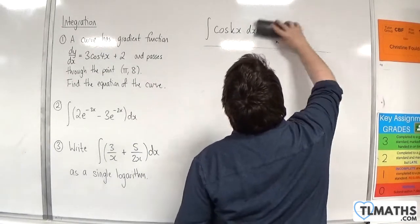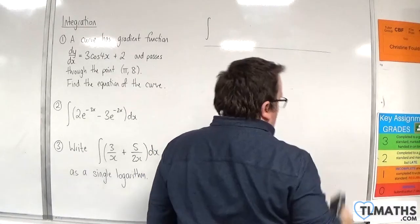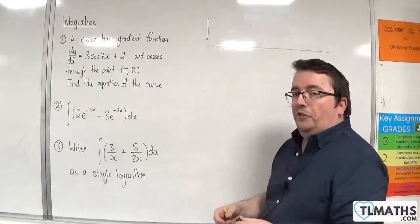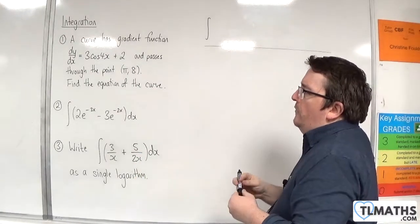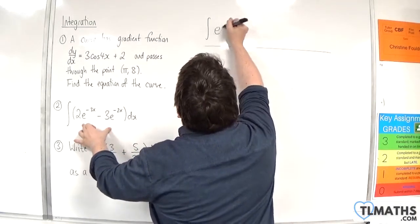Now, for number 2, we have the integral of 2e to the minus 3x take away 3e to the minus 2x. For this, we need to remember how we integrate e to the kx.